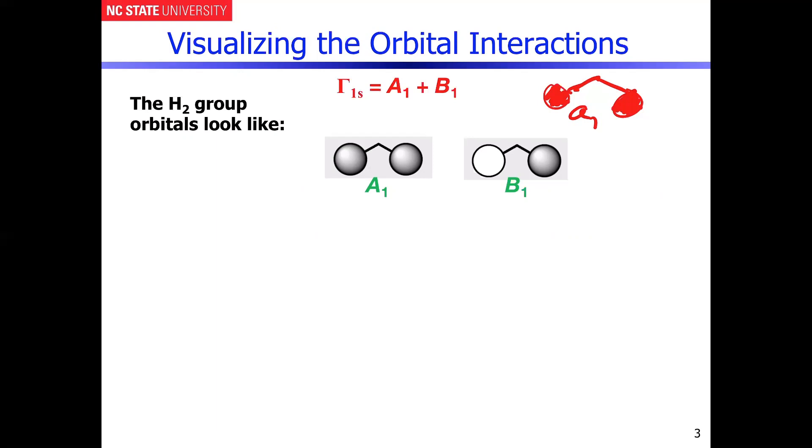And again the way you shade this is irrelevant because when you generate these linear combinations you can choose arbitrarily which side is shaded in which phase. It really doesn't matter. So here in this particular case we basically say that the subtractive combination gives you the B1 combination that's shown here. And that's obviously out of phase. But you can see very clearly that that has the same symmetry as the X axis.